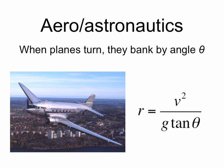Aero and astronautics make great use of trigonometry. A simpler example of this is when planes turn — they bank by an angle theta, and the radius of their turning is given by the following equation. Notice the tan theta in the denominator.